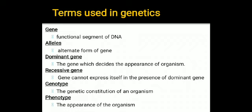The next term is the recessive gene. The recessive gene cannot express itself in the presence of the dominant gene. It can decide the appearance of the organism only in the presence of another recessive gene. If there are two recessive genes, the recessive character will come out. For example, if there is a dominant gene (capital T) and a recessive gene (small t) present together, the dominant gene expresses itself. But if it is two recessive genes, the recessive character expresses itself.